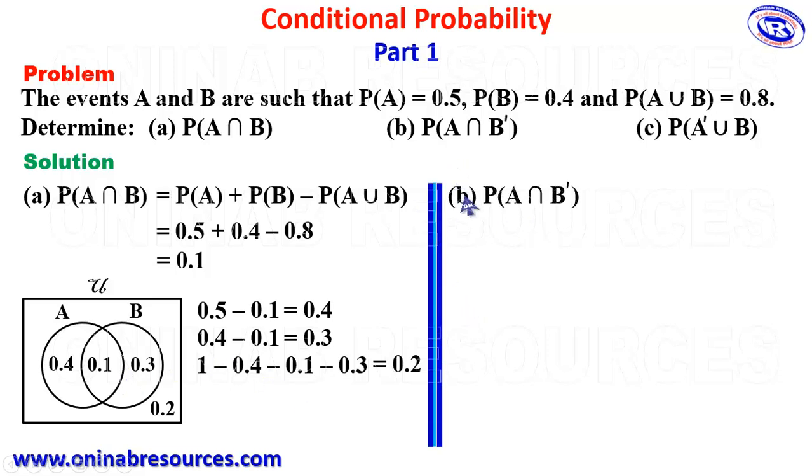We then go ahead to determine B, which is P of A intersection B prime. And that is A only. We have it here. This is the region. And that gives 0.4.